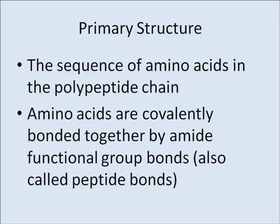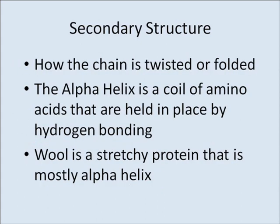In summary, the primary structure of proteins is the sequence of amino acids in the polypeptide chain. Amino acids are covalently bonded together by amide functional groups, also called peptide bonds. The secondary structure is how the chain is twisted or folded. The alpha helix is a coil of amino acids held in place by hydrogen bonding. Wool is a stretchy protein that is mostly alpha helix.